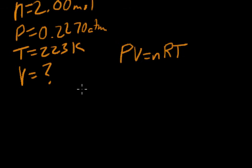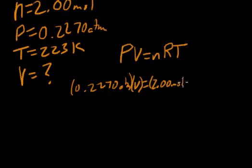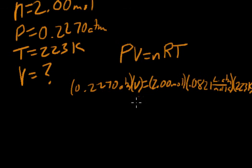Our next thing to do is to substitute. That's the first S in GUESS. So we substitute in for all of these variables. The pressure is 0.2270 atmospheres. The volume is what we're solving for, so I'm just going to leave it as a variable. The moles are 2.0 moles. The R is always the same, it's 0.0821, so that's what I'm going to write: 0.0821 liters atmospheres per mole Kelvin. Notice that I'm putting all the units on all these numbers. No naked numbers. And then our last variable is temperature, 223 Kelvin.